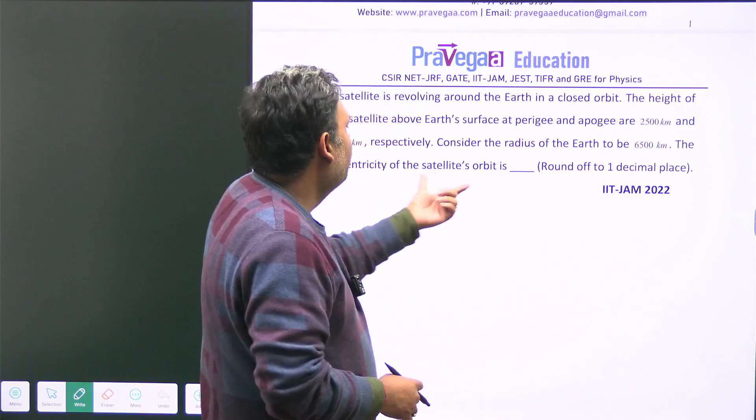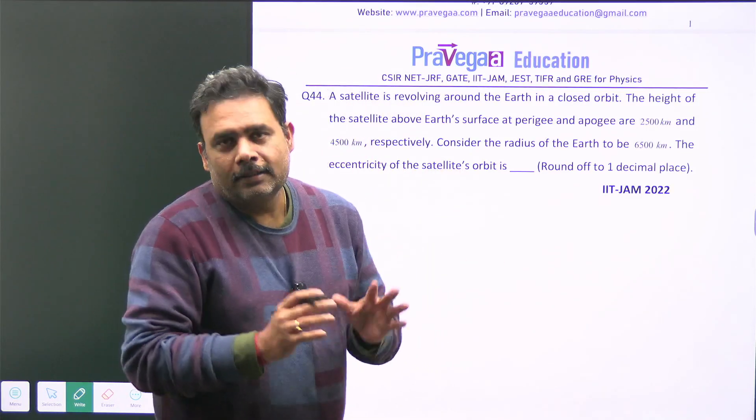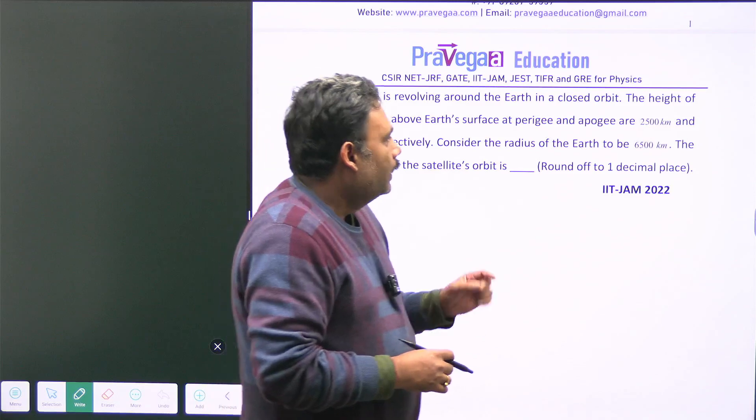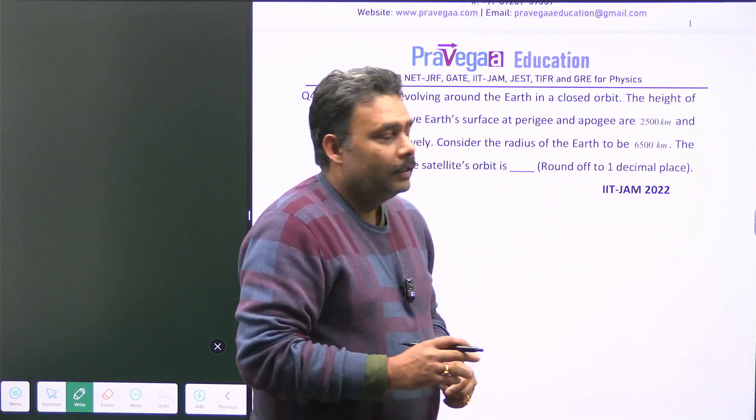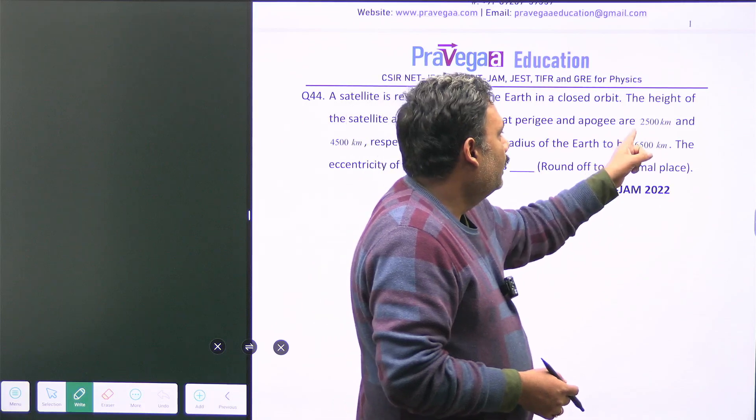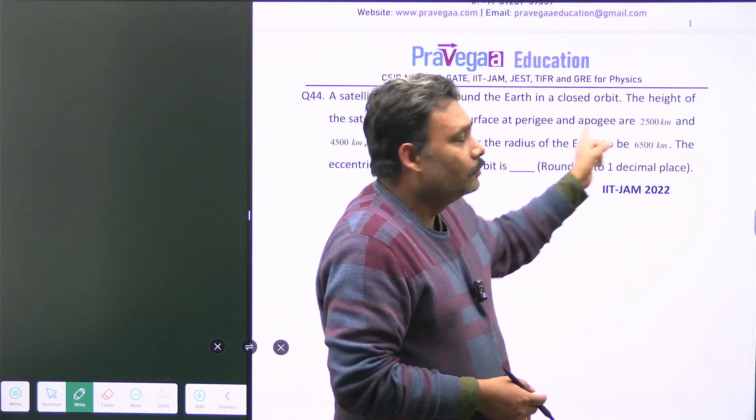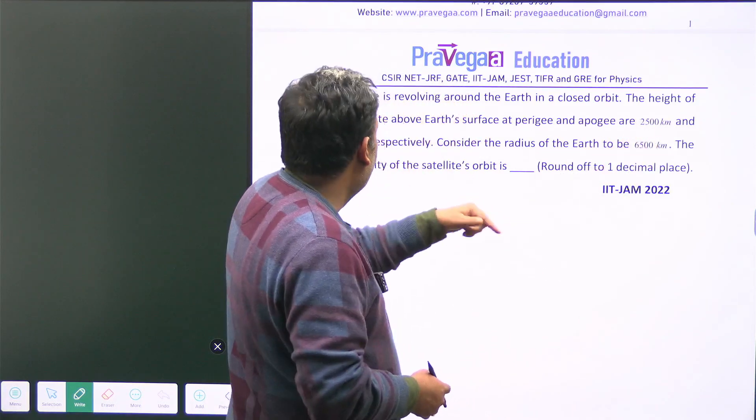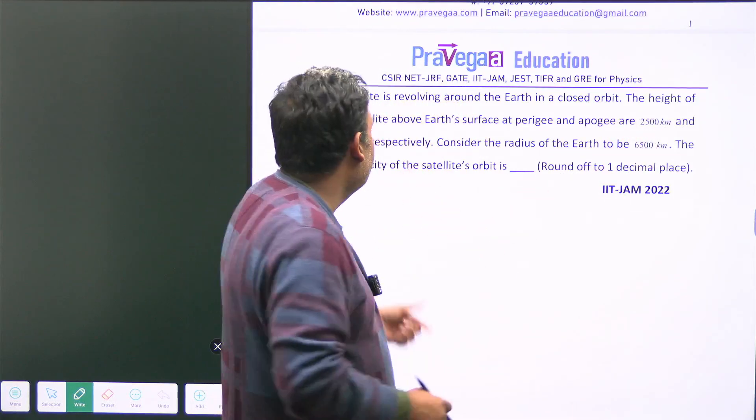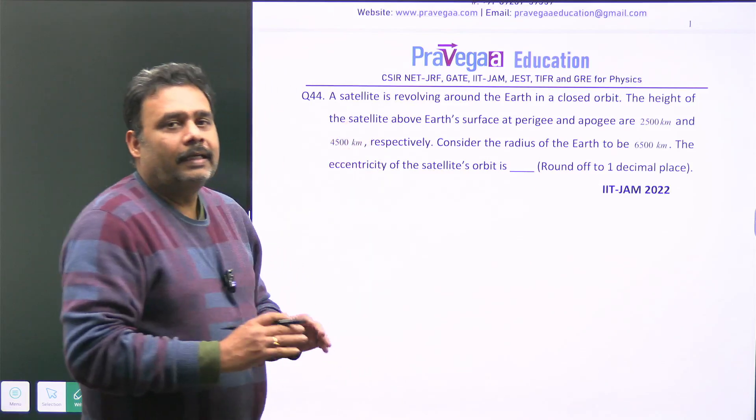So what will be the eccentricity of satellite? So you have to see all these numbers very carefully. It is given the radius of earth is 6500 km and the height from the surface, so this is actually altitude from the surface, which is 2500 at the perigee, meaning the minimum distance, and 4500 at the maximum distance.